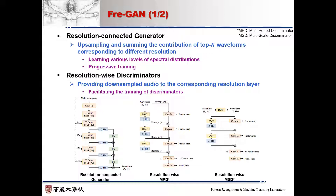FrGAN employs two types of discriminators: resolution-wise MPD and resolution-wise MSD, which are drawn from HiFiGAN. To facilitate the training of discriminators, we provide down-sampled audio to the corresponding resolution layer.